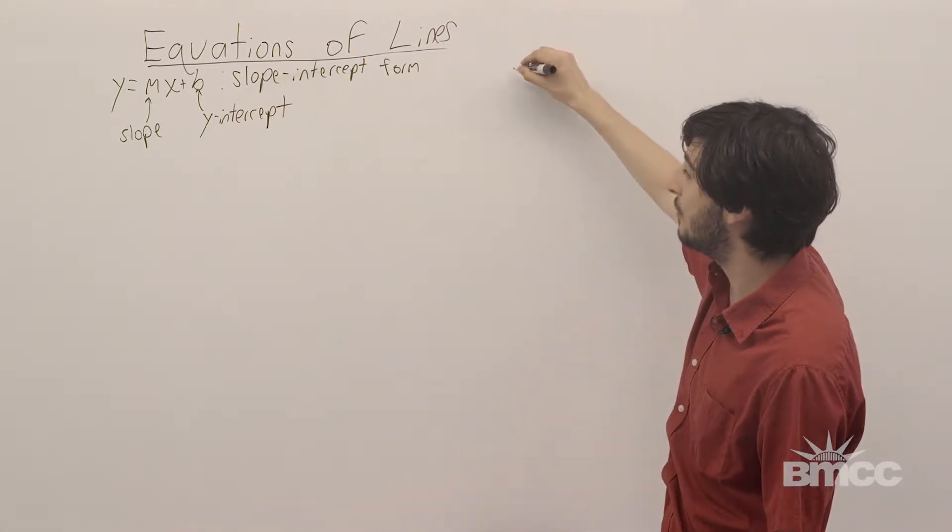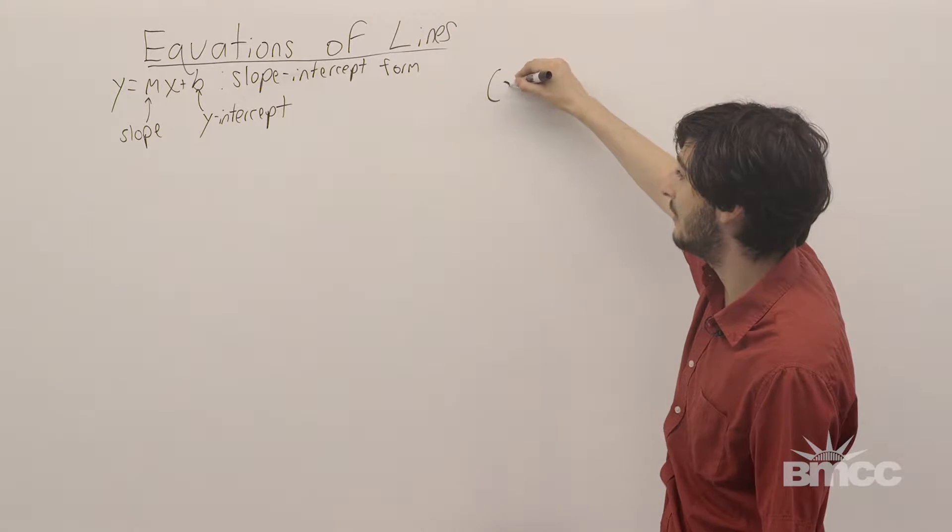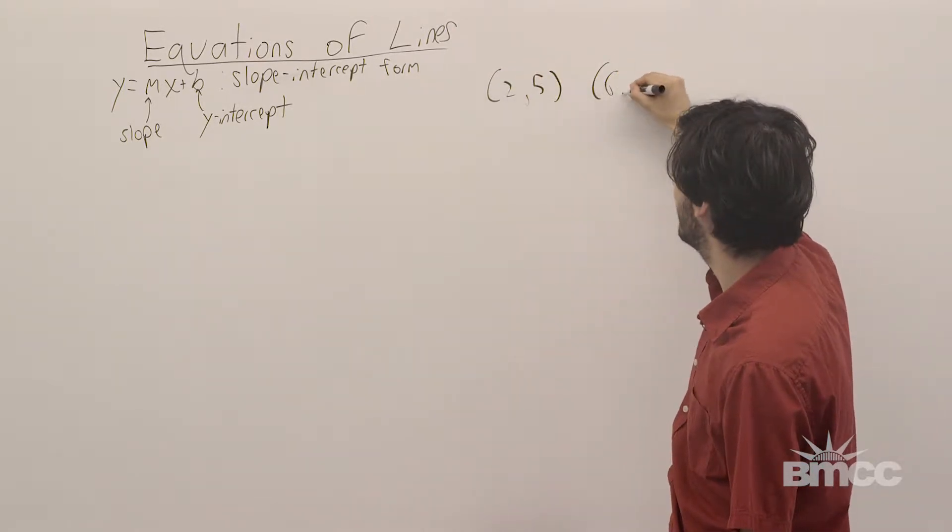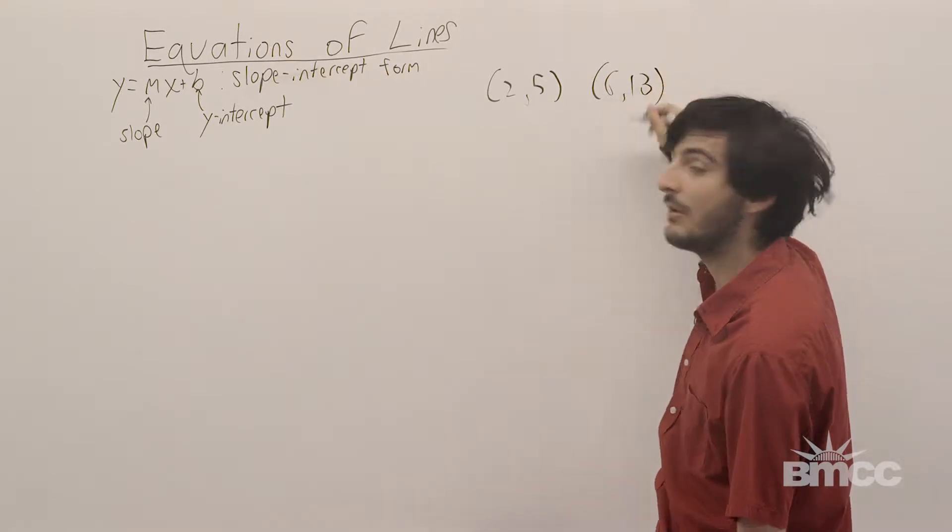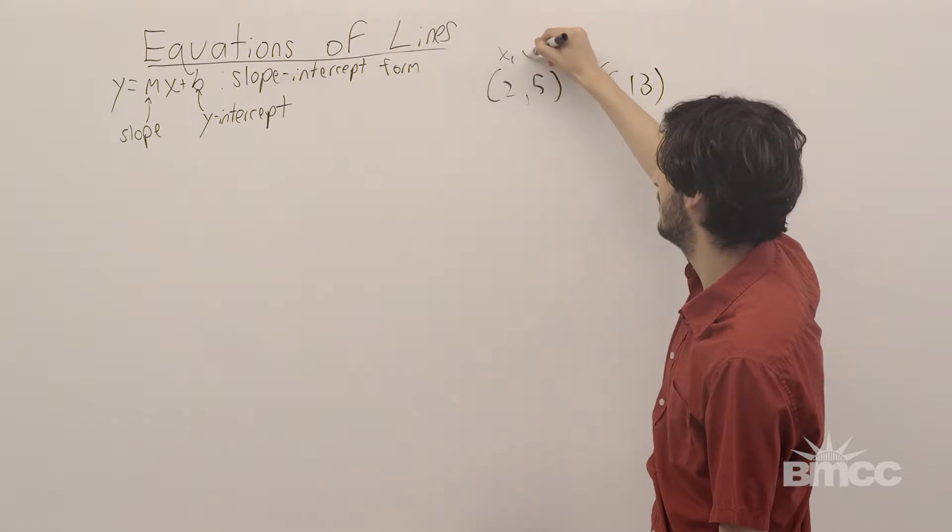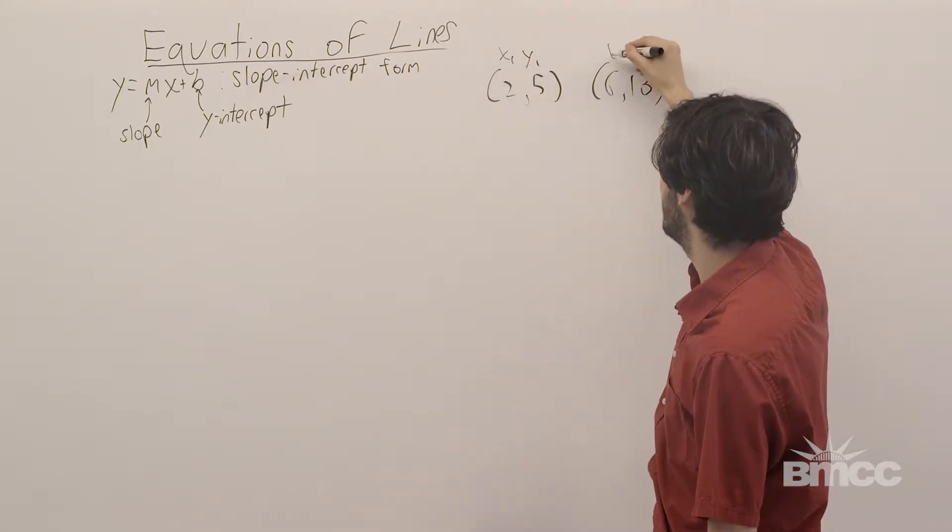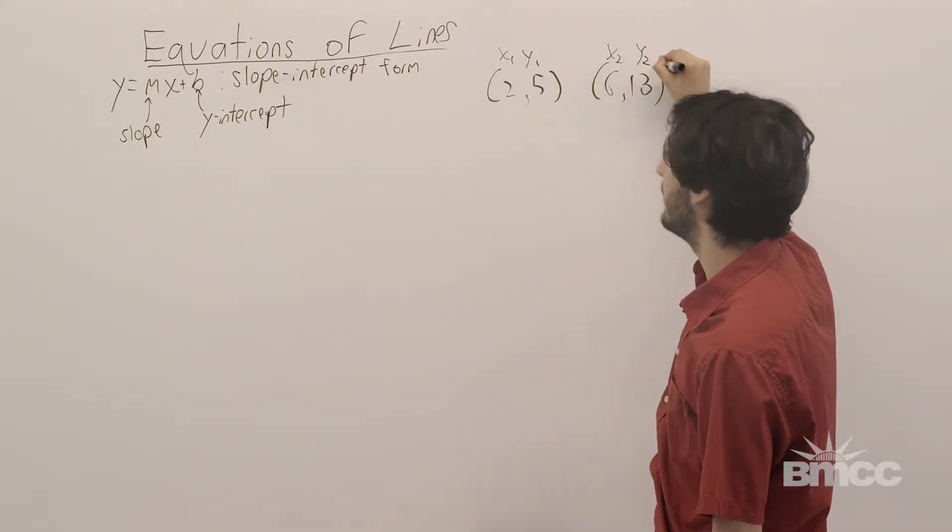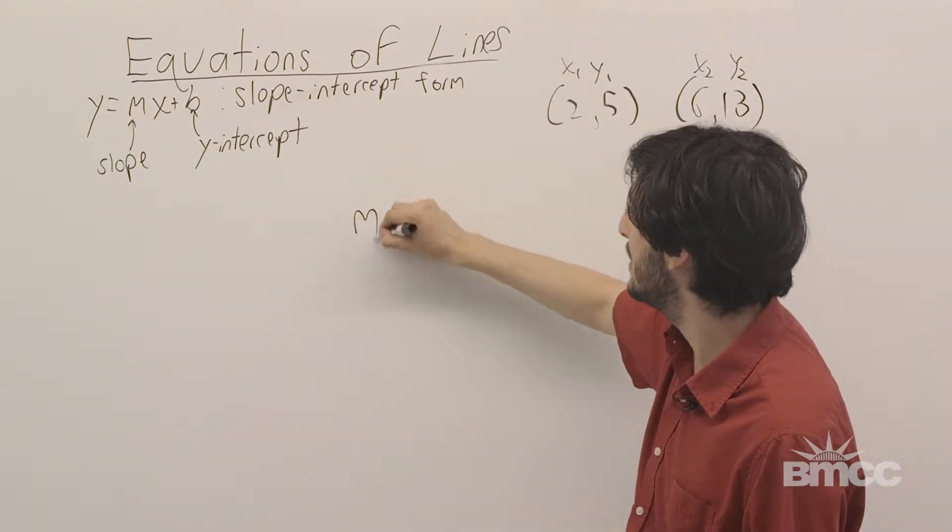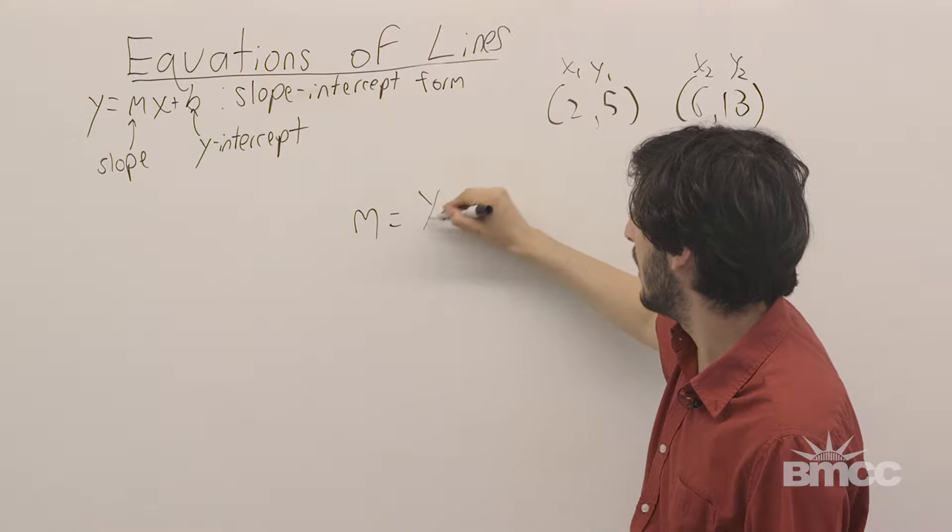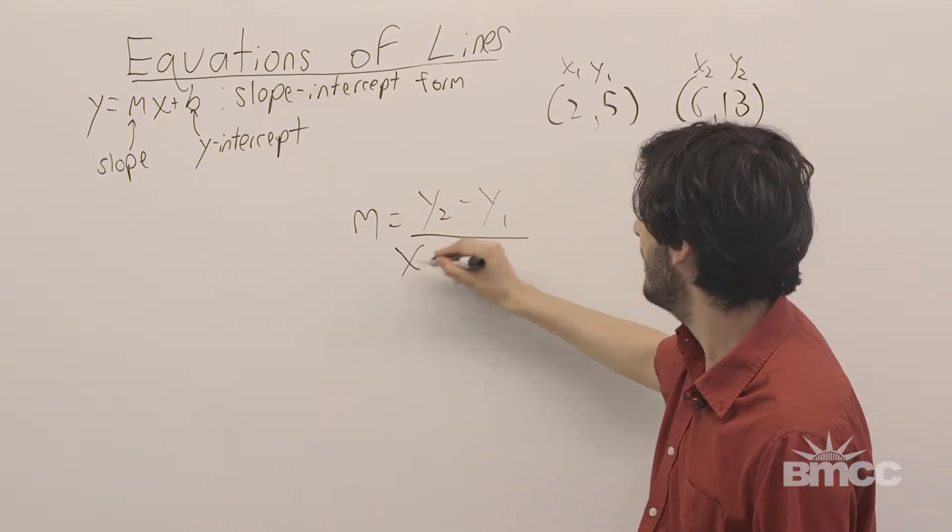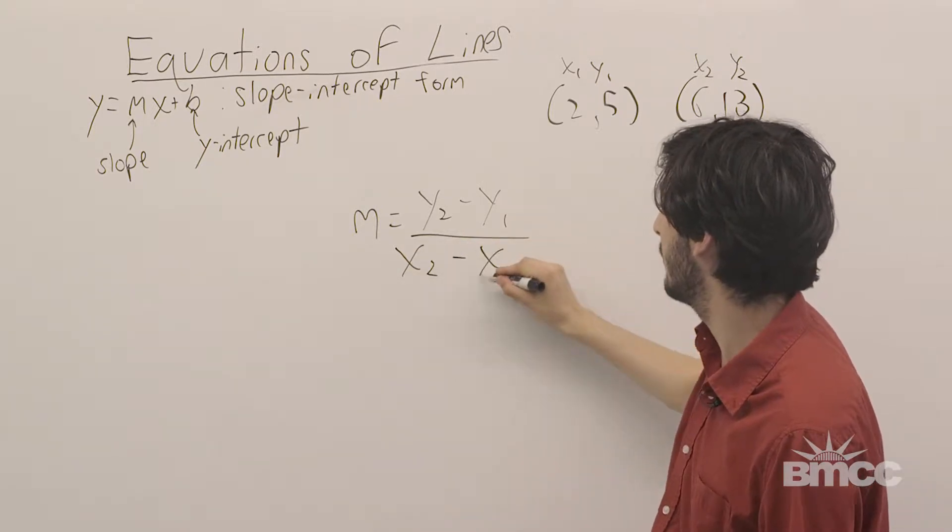So, suppose we're given the two points 2, 5 and 6, 13. I'm just going to denote these points as x1, y1, and x2, y2. And we know that the formula for slope, m is y2 minus y1 over x2 minus x1.